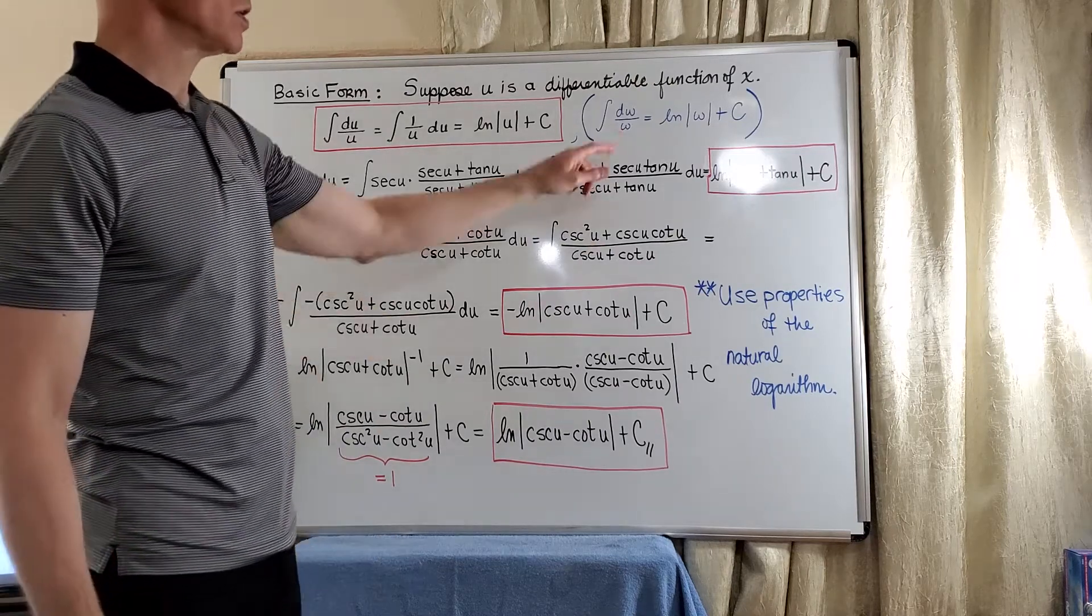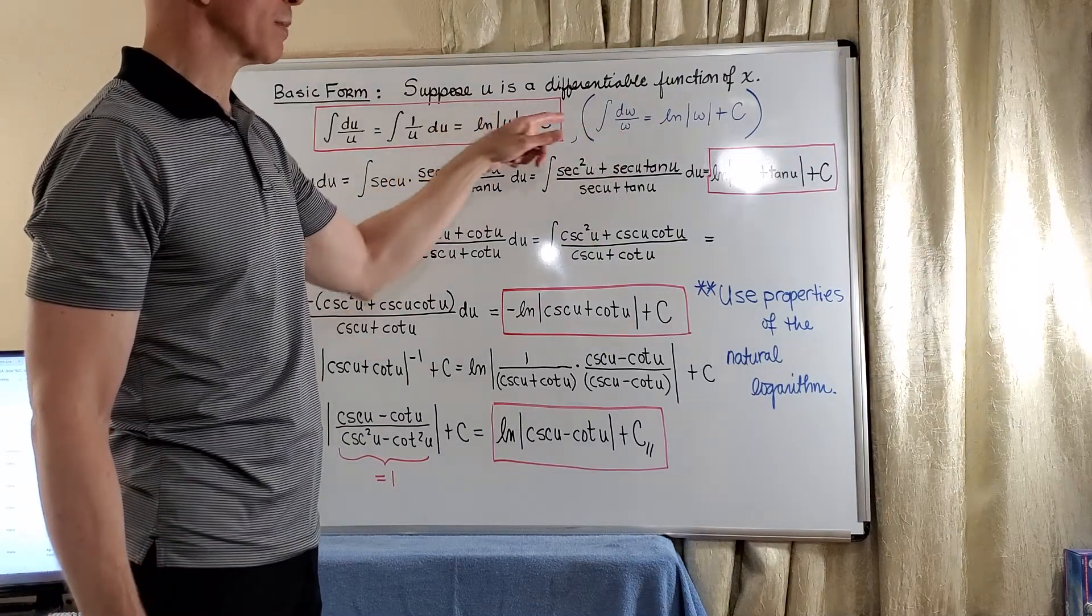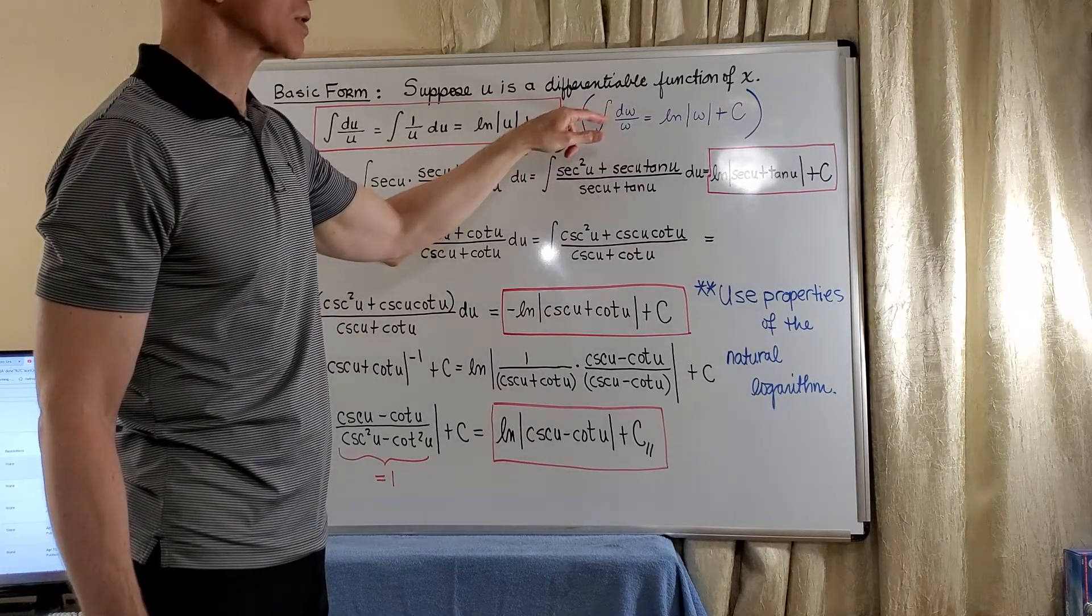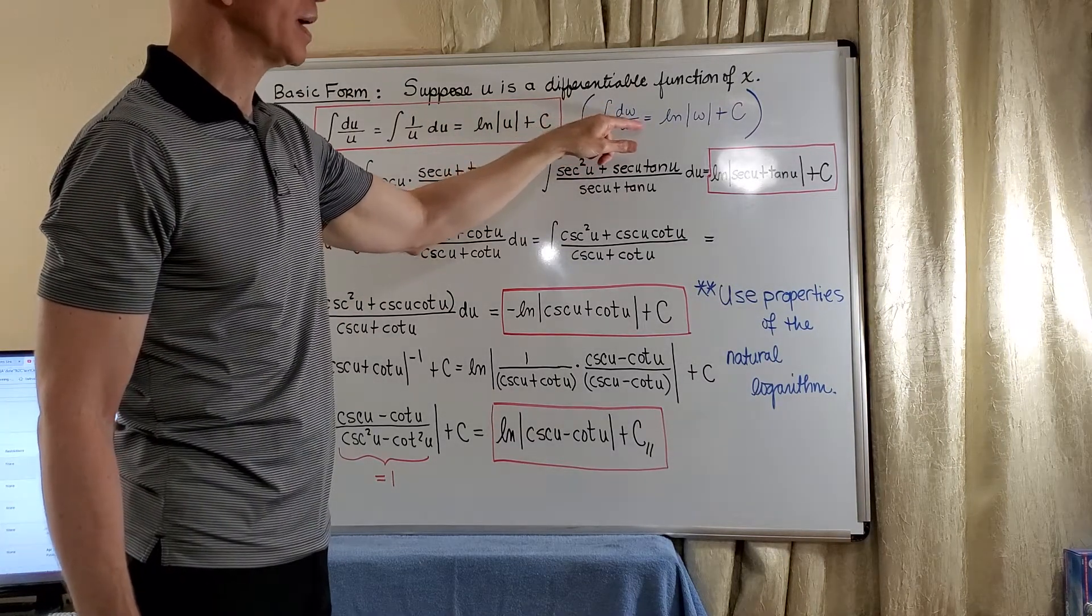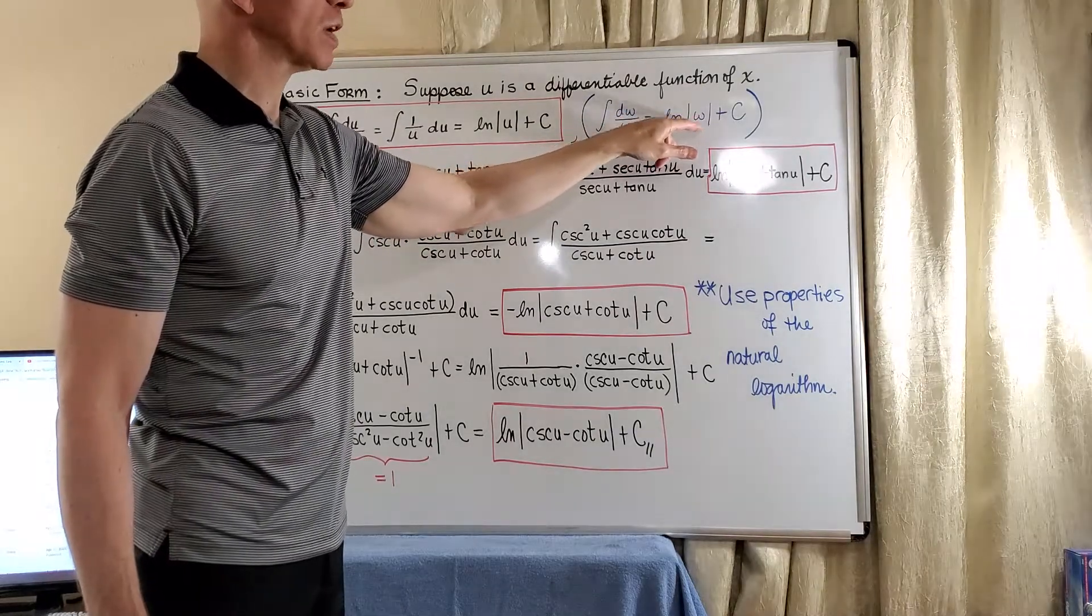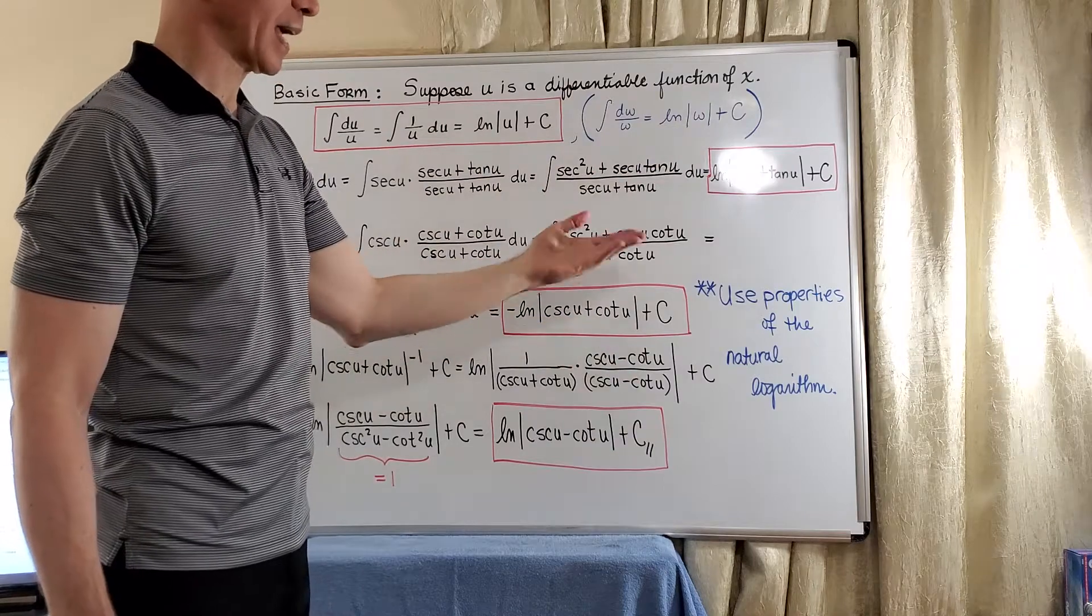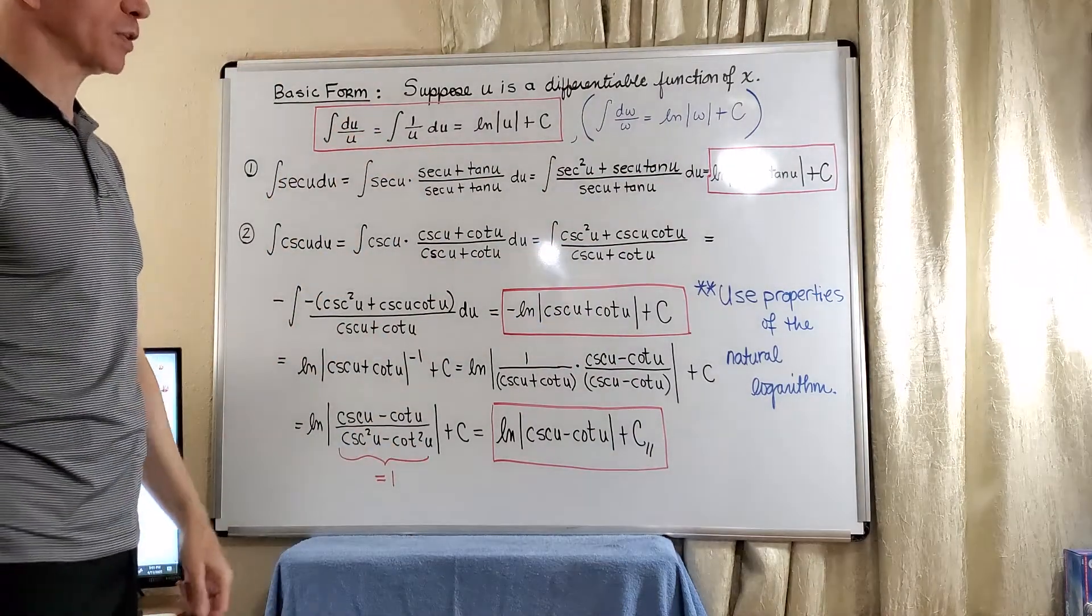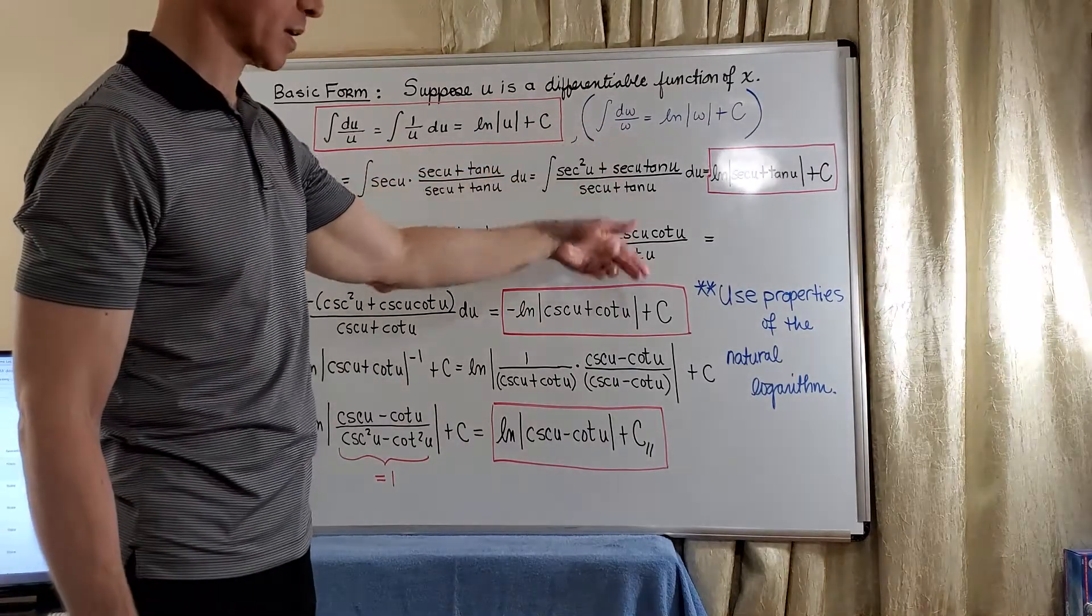So now, of course, if we use u as a variable and we need another variable, we can also think of this form as dw over w equal natural log of the absolute value of w plus c. Normally, you see most of these formulas written in terms of u, but I will allude to this as I go through these forms.